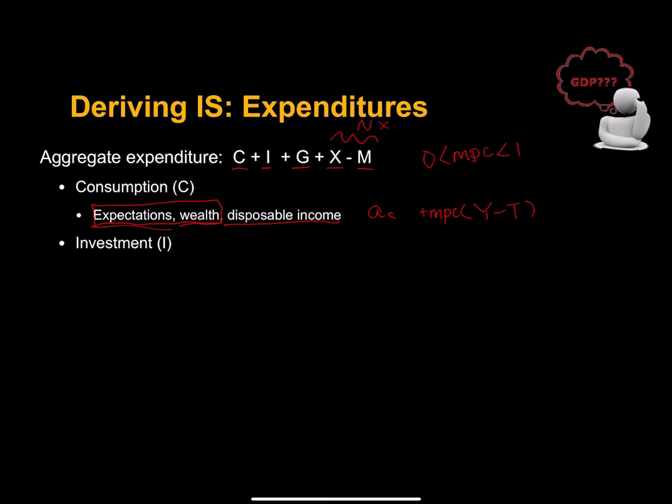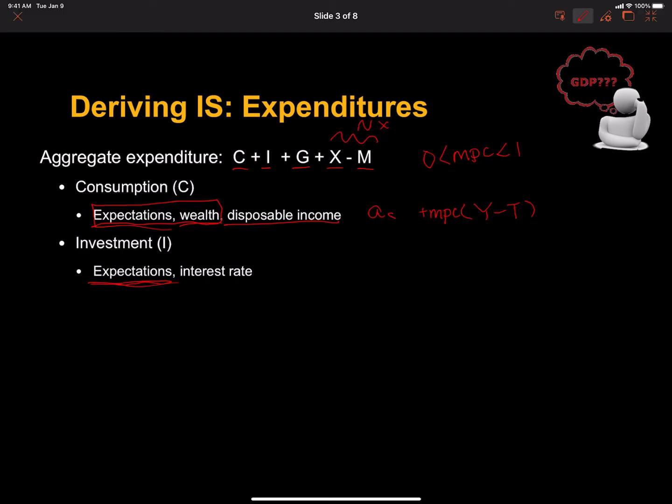Now, investment expenditures. This is firm spending on capital goods, machines, equipment structures, new housing, and inventory. Investment depends a lot on expectations, firm expectations of future profits. If you're expecting high sales, you're going to buy more inventory or expand your factories. We assume that this type of investment spending is autonomous, and we're going to say autonomous AI.